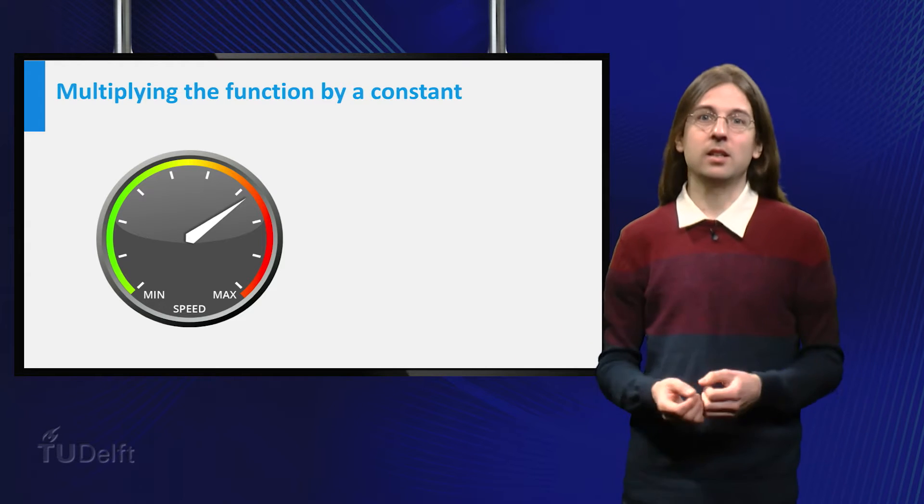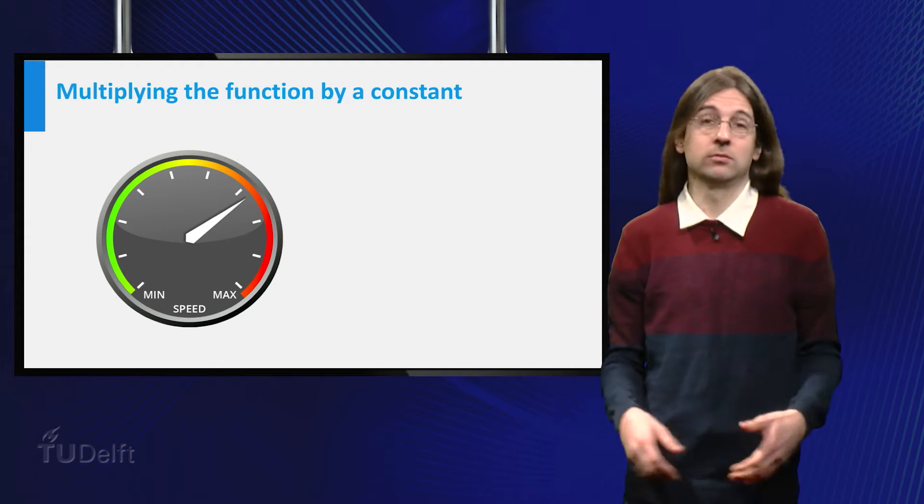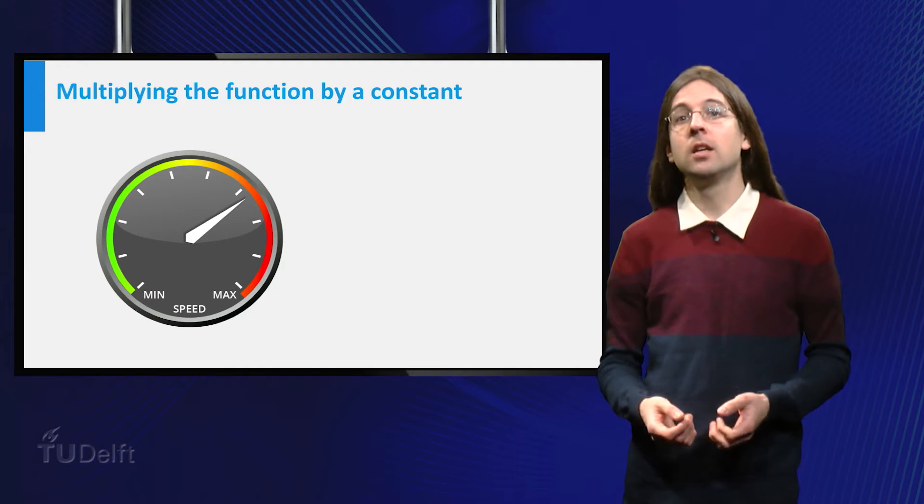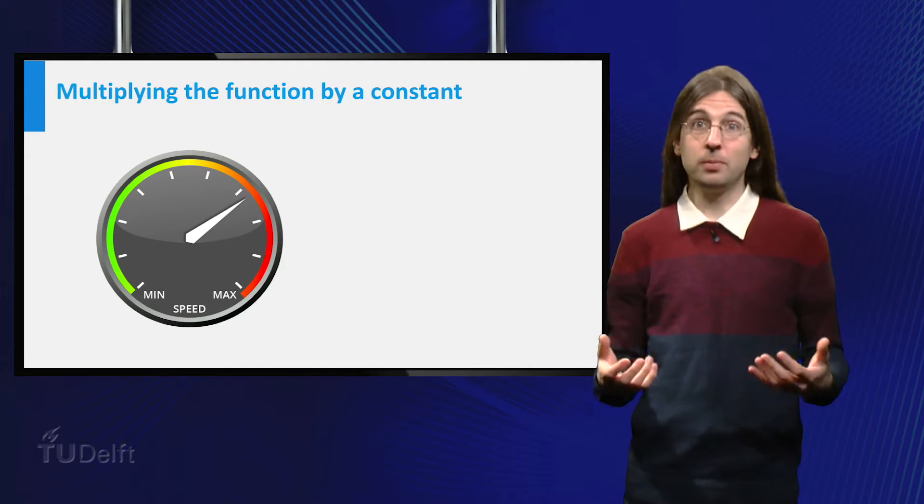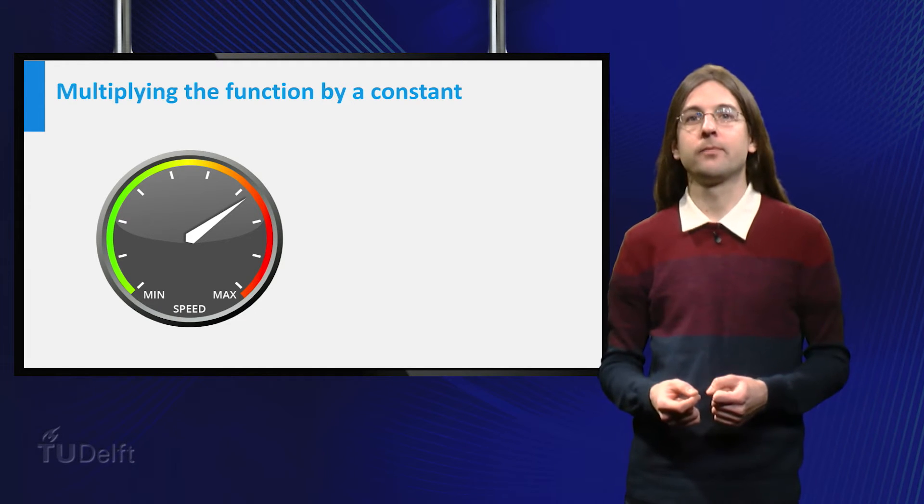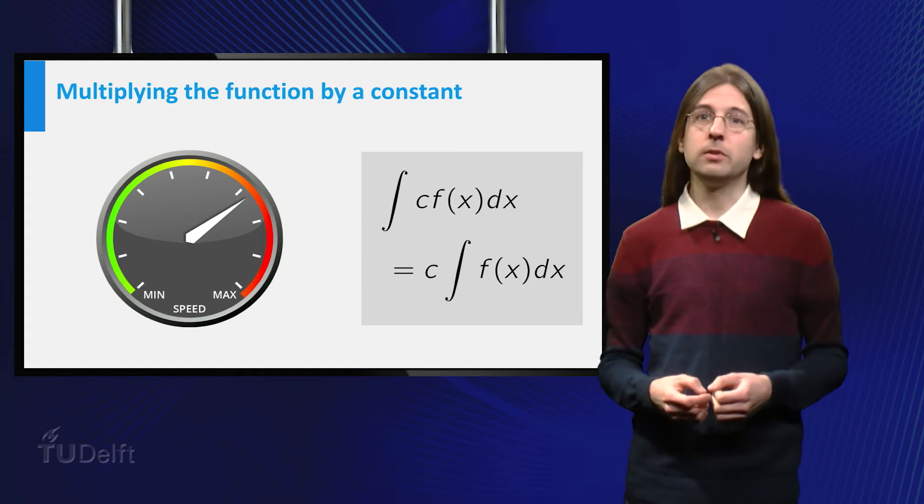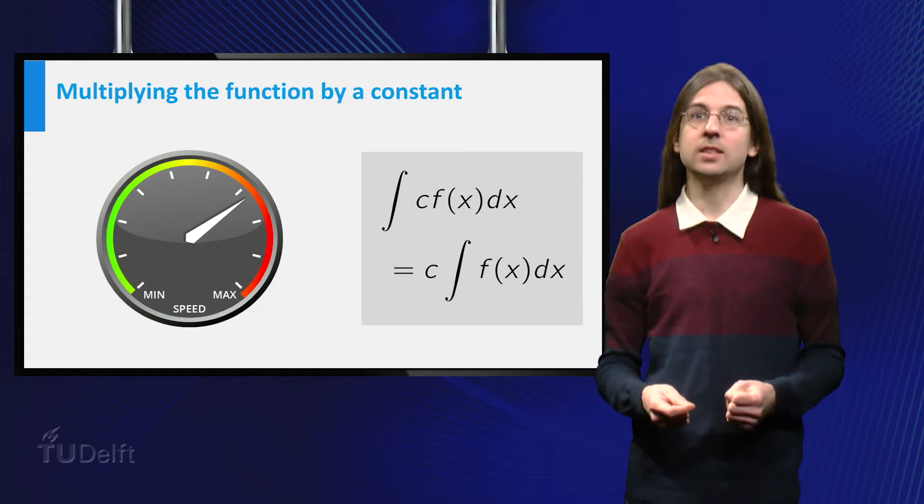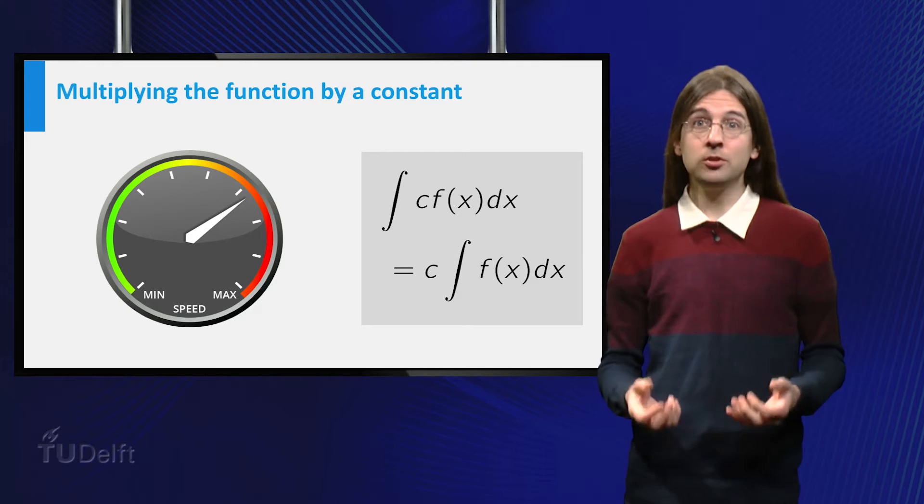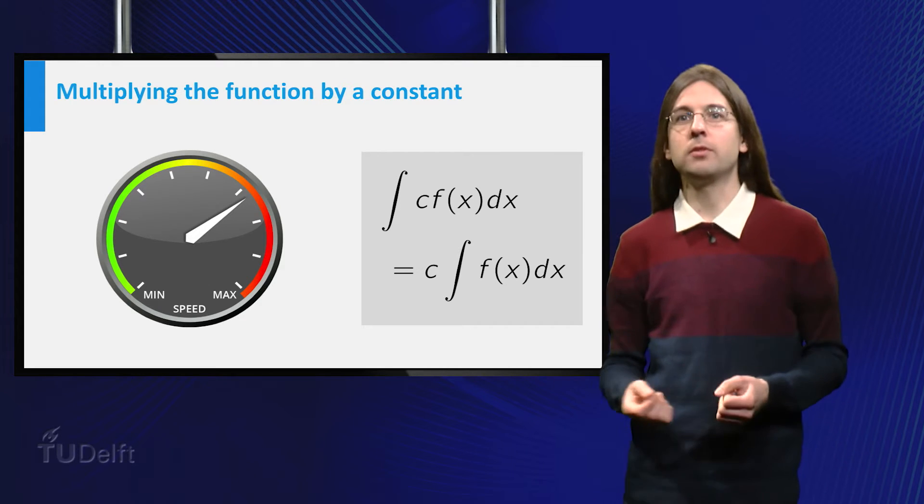And if we multiply our speed by a different number, constant c, the distance travelled is multiplied by that c. Thus we obtain the rule that the integral of a constant c times f equals c times the integral of f.